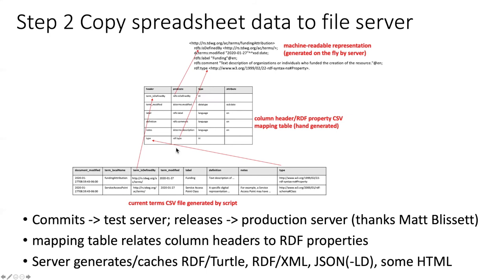Then there's a mechanism by which commits to the repository cause it to be pushed out to a test server, and releases from the repository cause the data to be pushed into a production service. Thanks to Matt Blissett of GBIF who worked out these details. What happens in this case is there are mapping tables that explain how the column headers in the tables in the repository get mapped to properties. This allows the server to then generate the machine-readable representations in Turtle and XML, and also some of the HTML representations are generated automatically.